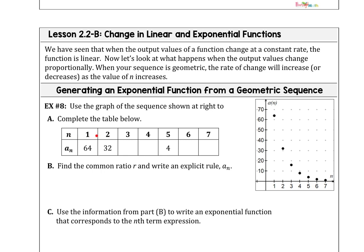So on equal spaced input intervals, the output values are going to change proportionally. In this first example, we want to complete the table looking at the rate or the ratio between 64 and 32.